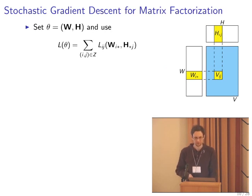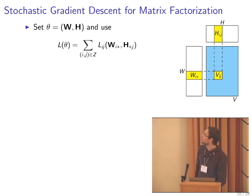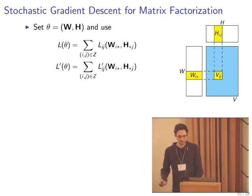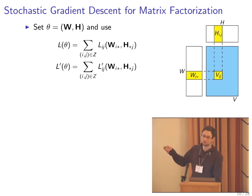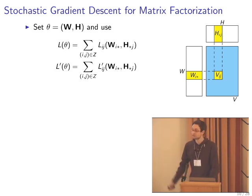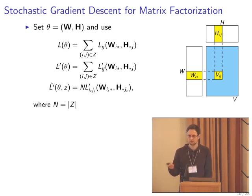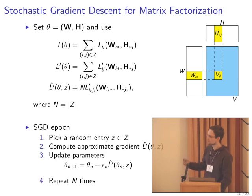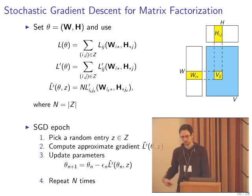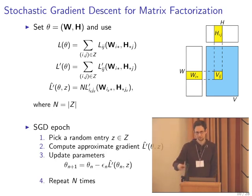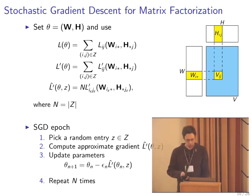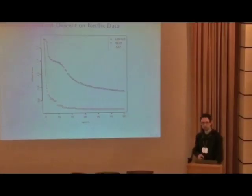How does this look for matrix factorization? The loss is just the sum of all the observed entries. The gradient of this loss, because the gradient is a linear operator, is just the sum of local gradients over all entries. To get a quick estimate of the gradient, you just take one random entry, evaluate its loss, and scale it up by the number of values. It's a very cheap and crude approximation of the gradient. The algorithm picks a random entry, evaluates the gradient, updates the parameters, and repeats. It sounds very stupid, but if you try this in practice, it works quite well.